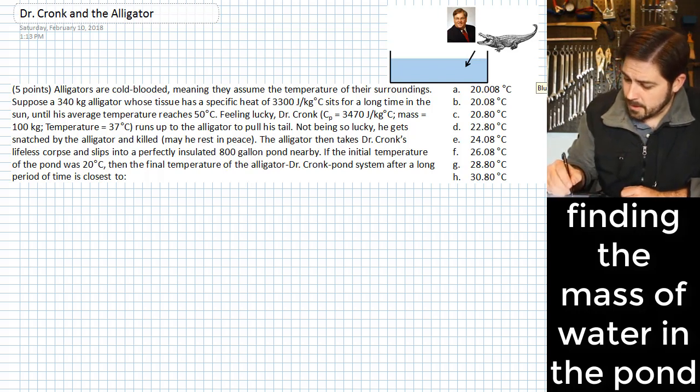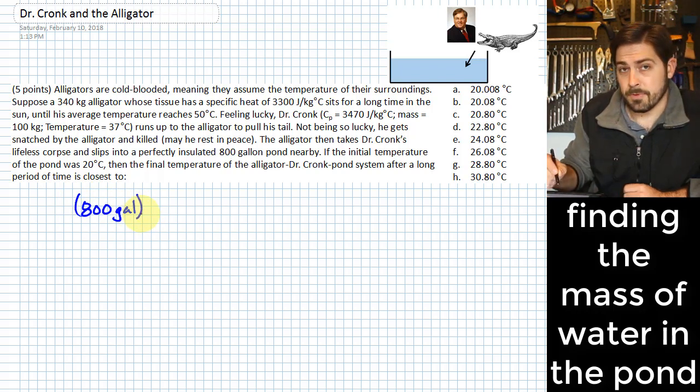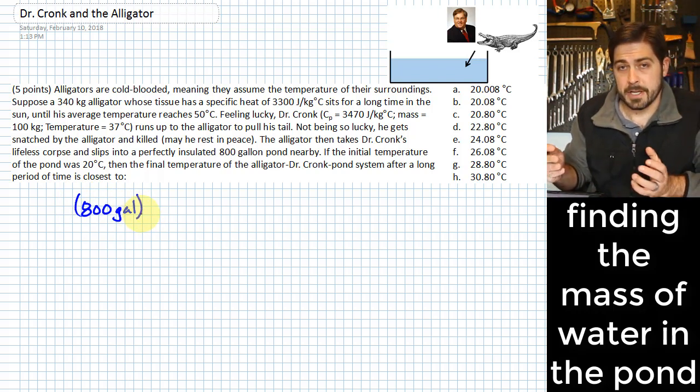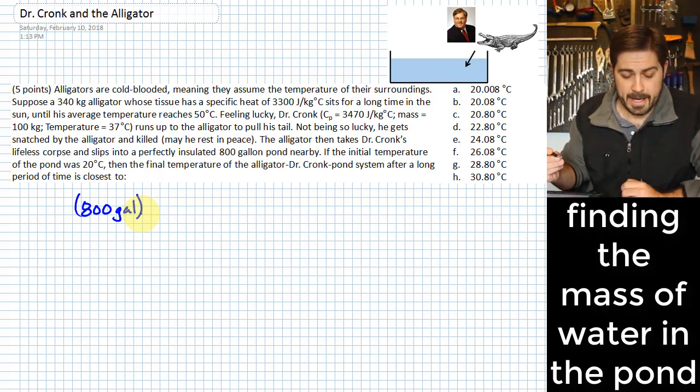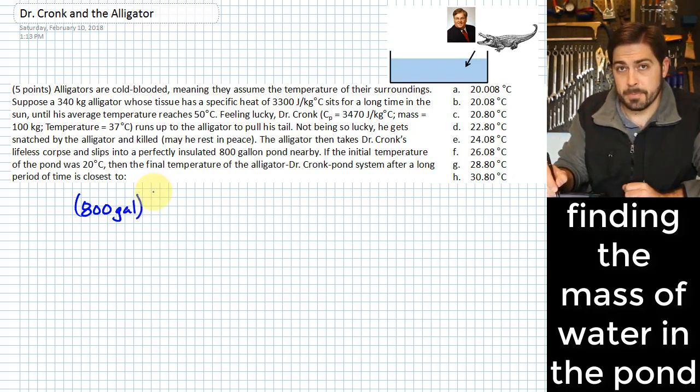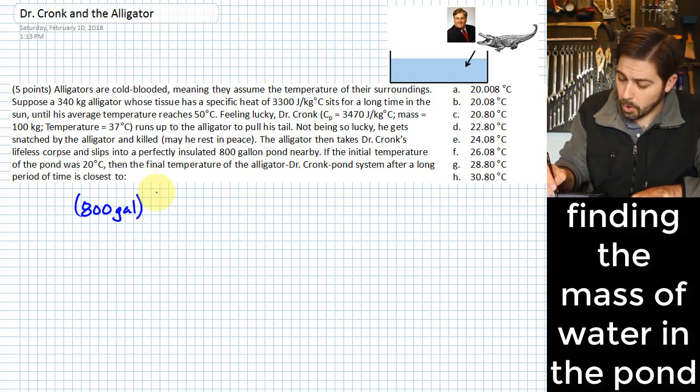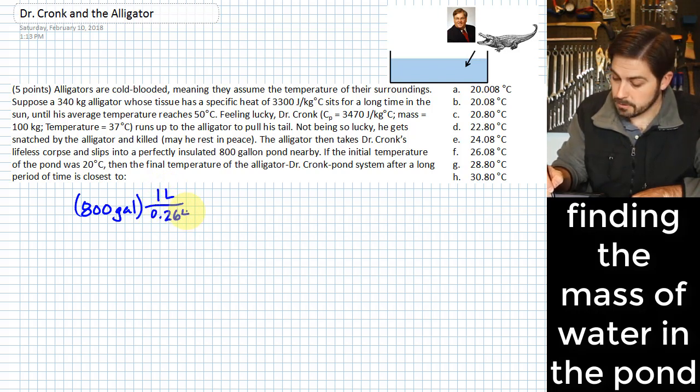800 gallons can be converted to liters if we know how many gallons are in a liter or how many liters are in a gallon. I happen to know this. This would be information that would be given in reference material typically. One liter is 0.264 gallons.